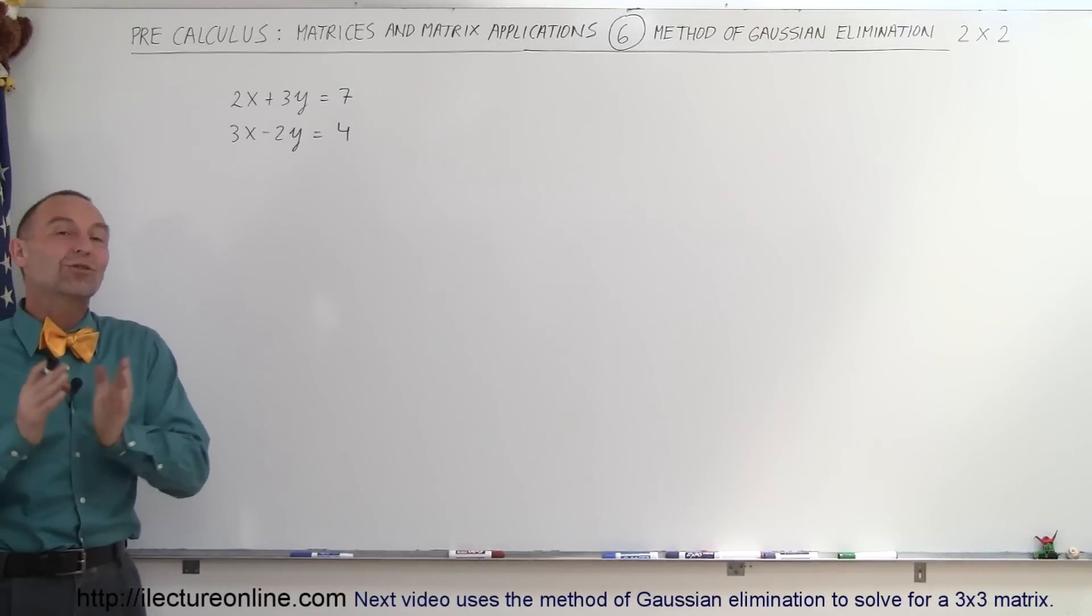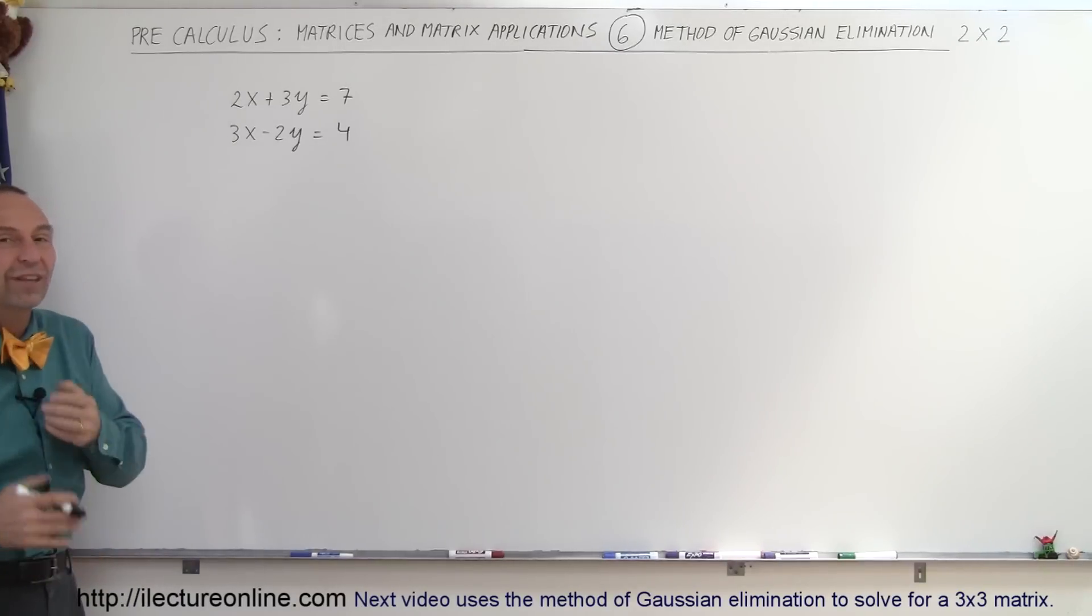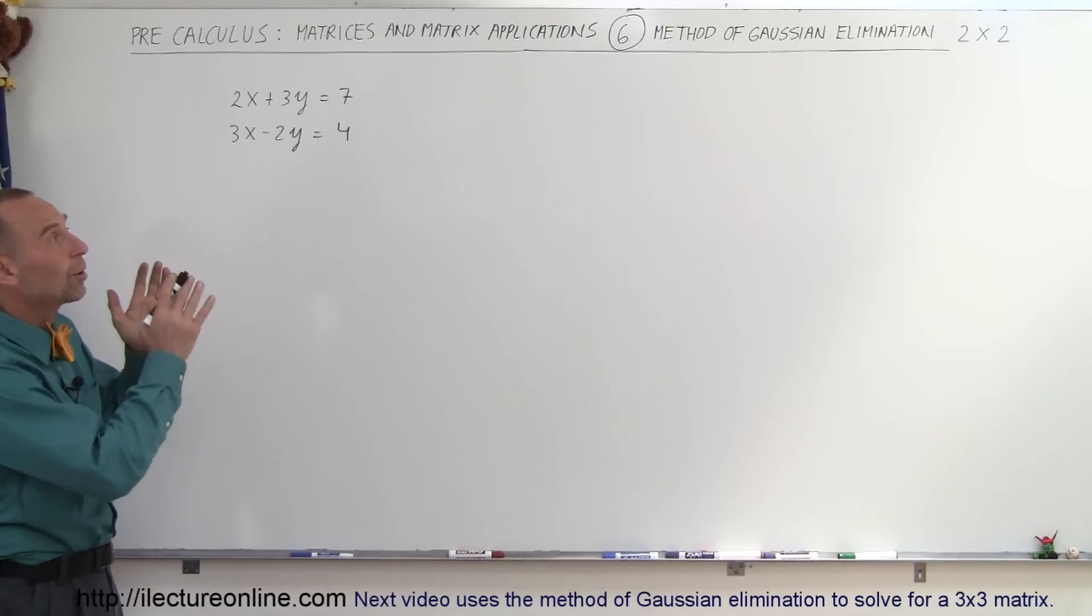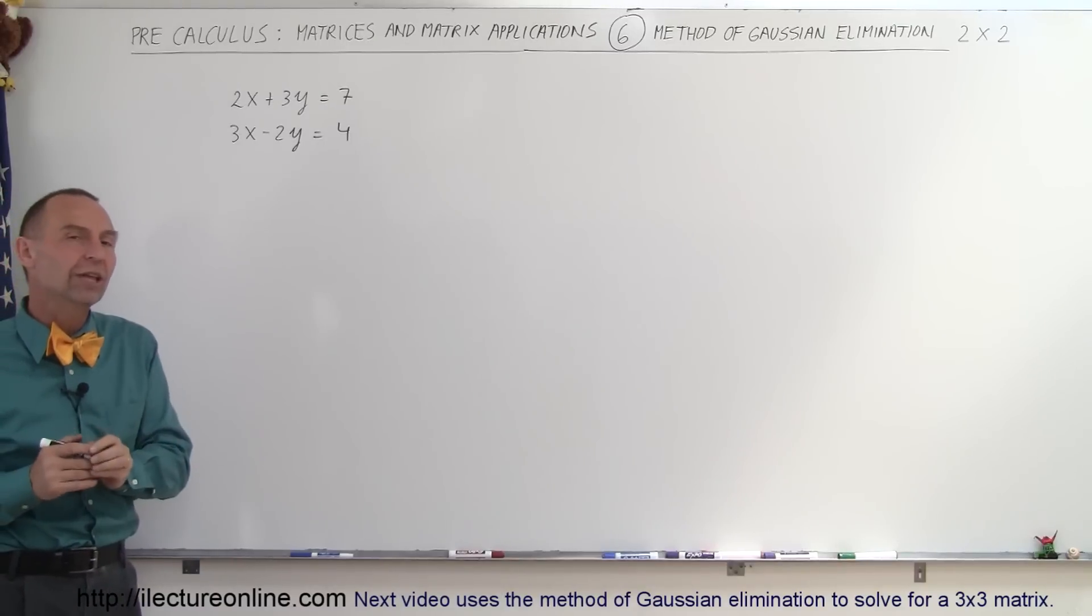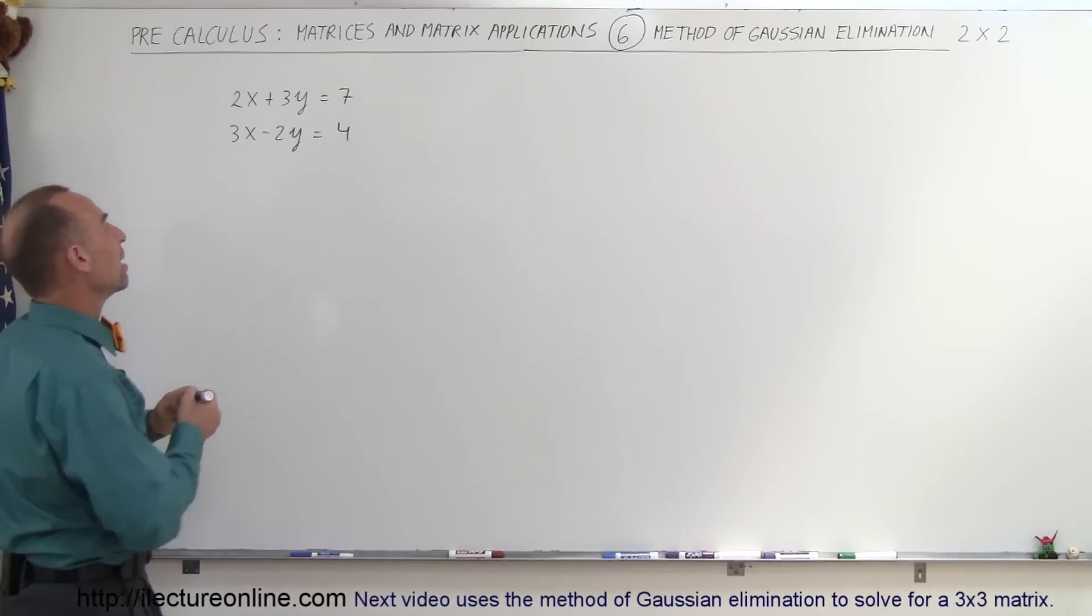Welcome to iLecture Online. Here we're going to solve a system of linear equations where we have two equations and two unknowns, the variables x and y. In order to do that, we're going to use the method of Gaussian elimination with a 2 by 2 augmented matrix.